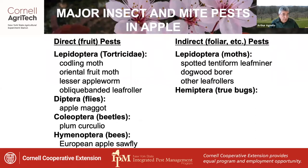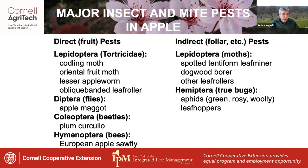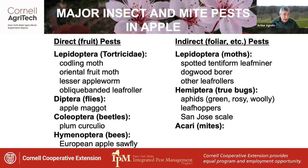In the group of Hemiptera — the true bugs — we have a variety of aphids: green apple aphid, rosy apple aphid, woolly apple aphid, and spirea aphid, as well as leafhoppers — white apple leafhopper and potato leafhopper. Also in this order is San Jose scale. And in terms of mites, there's European red mite and two-spotted spider mite.